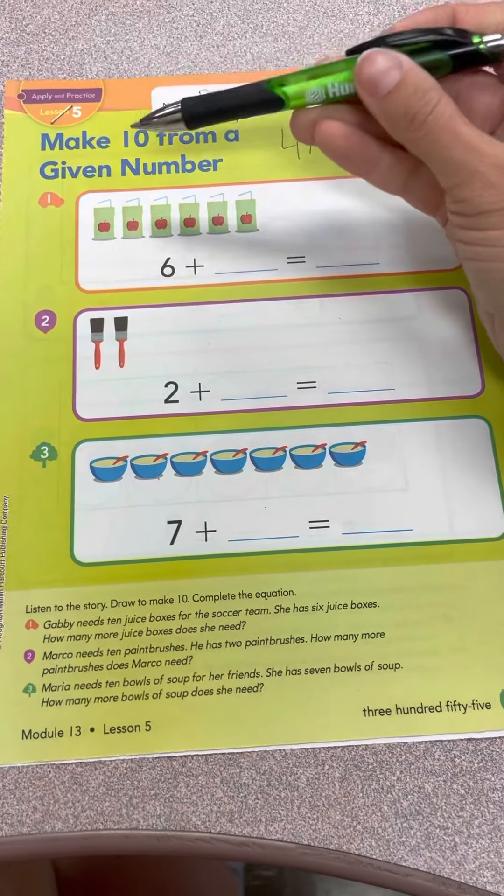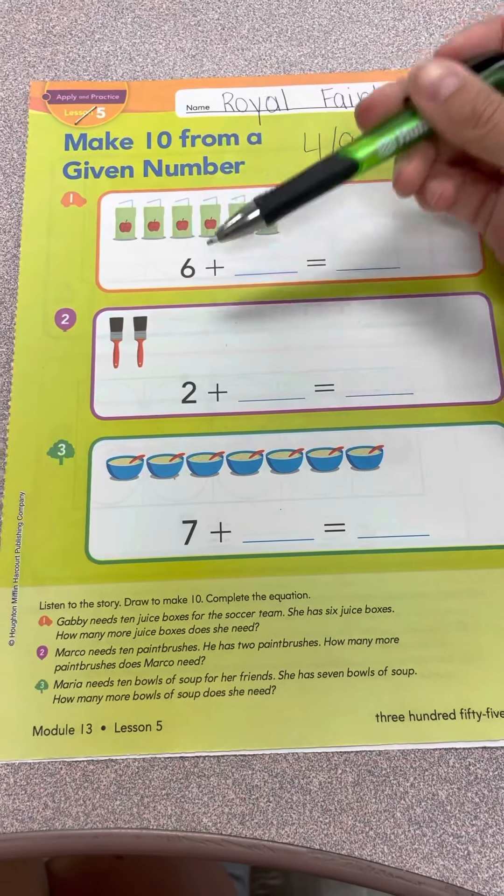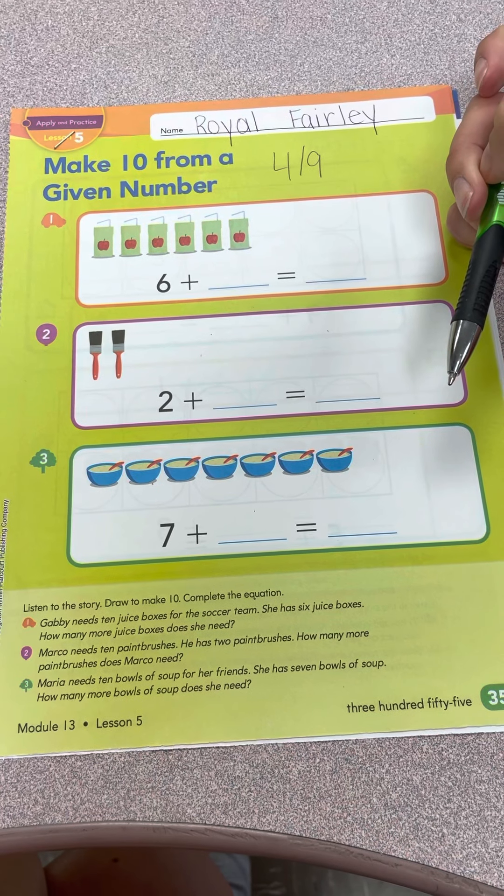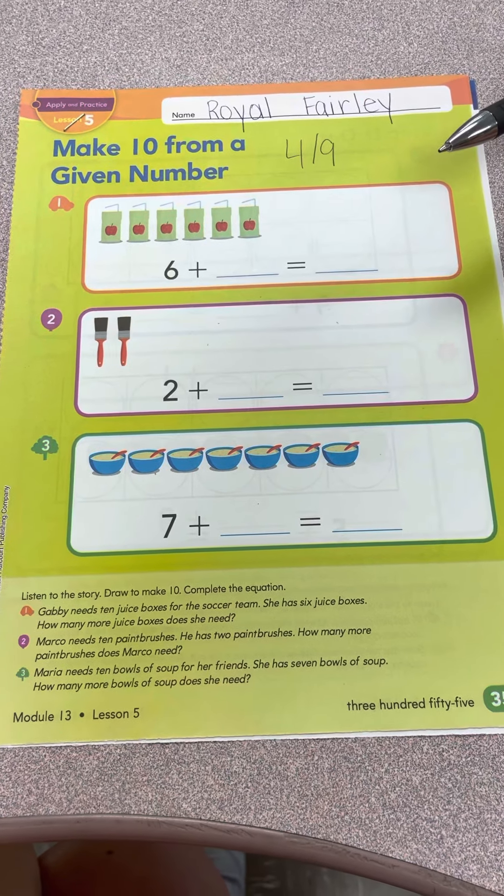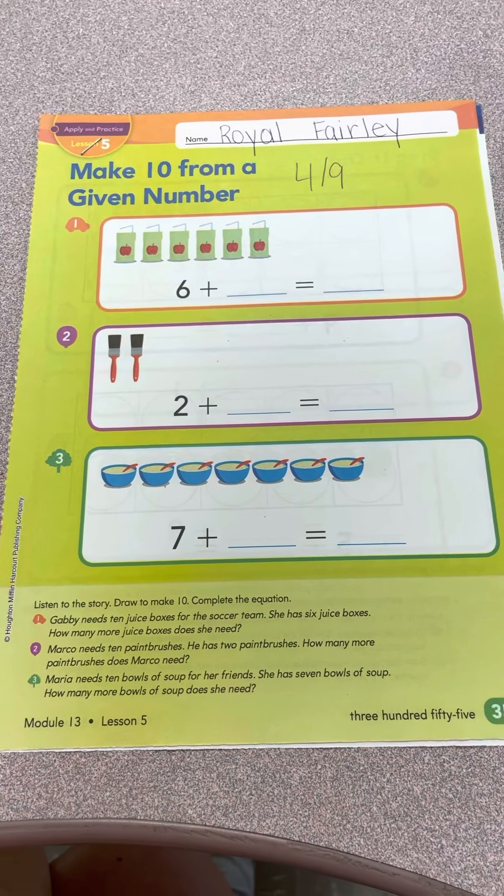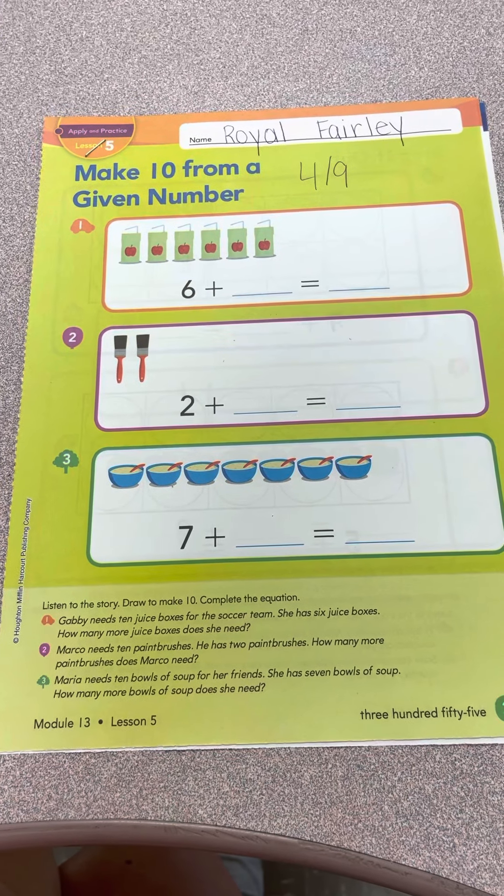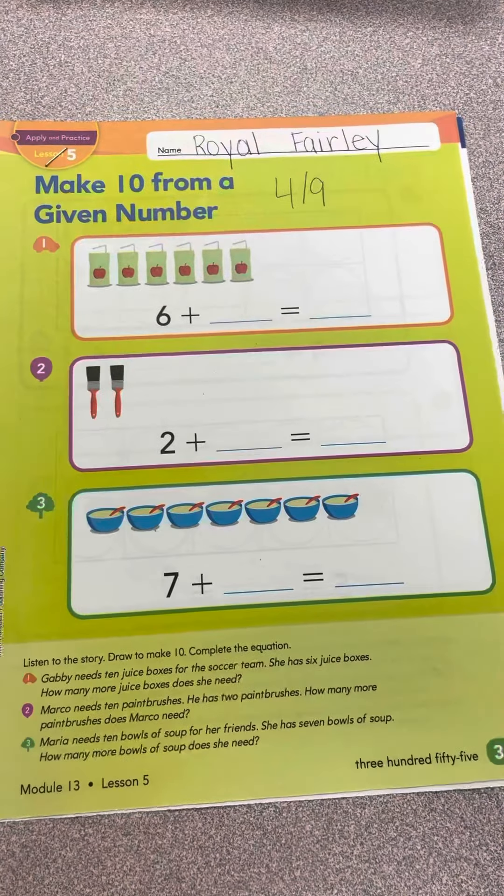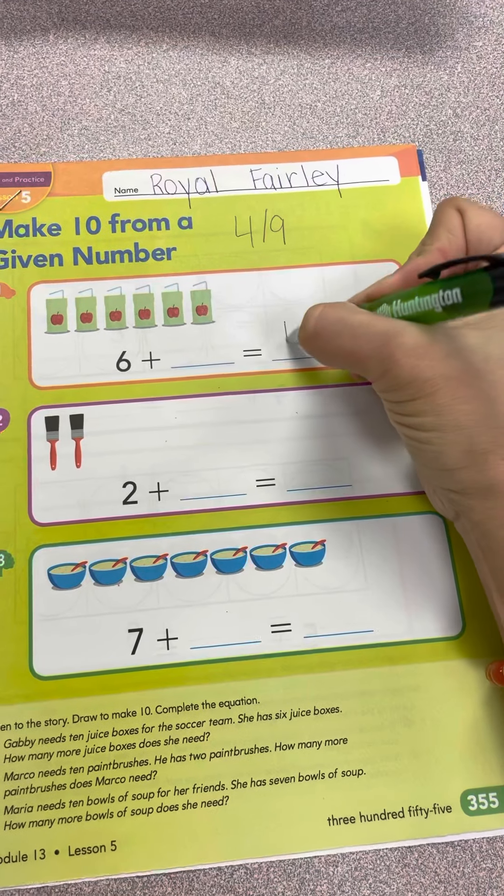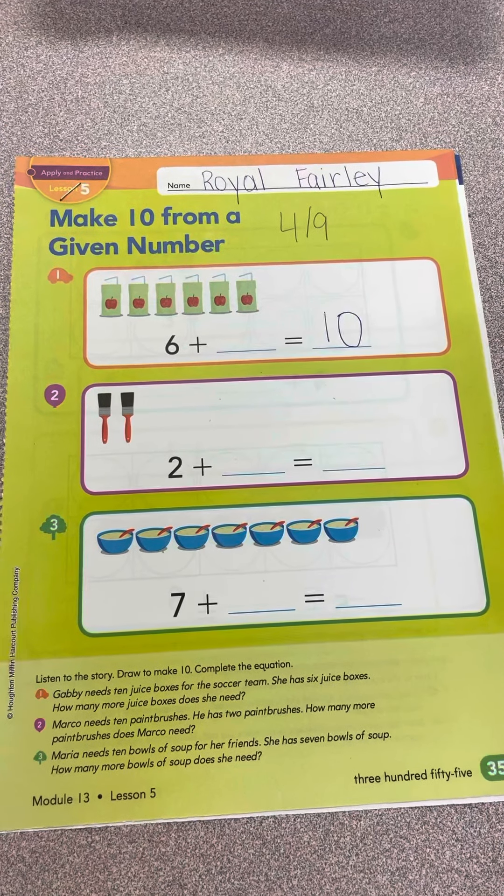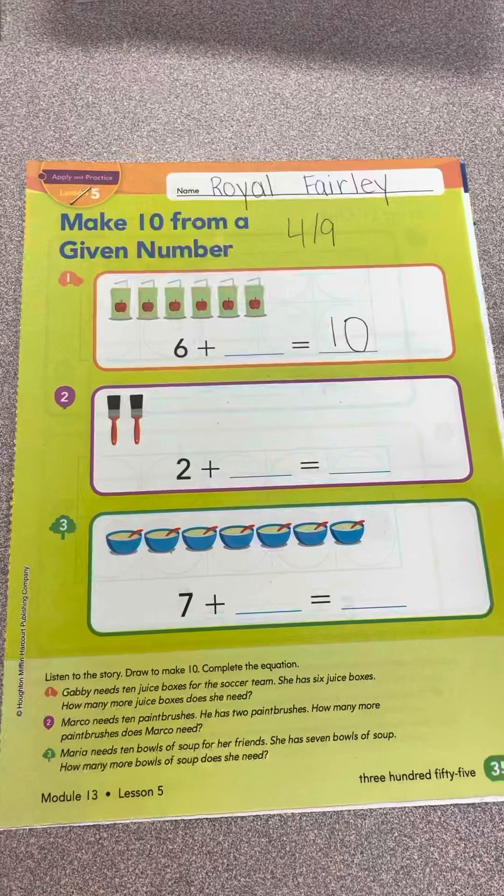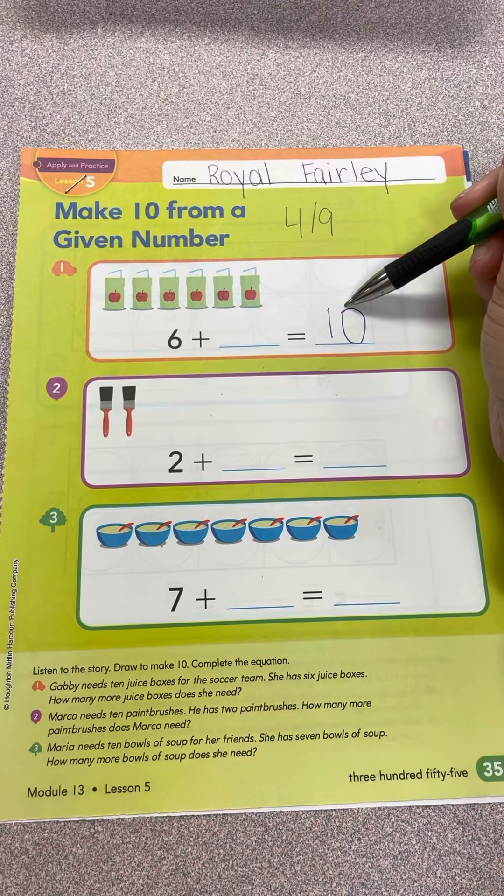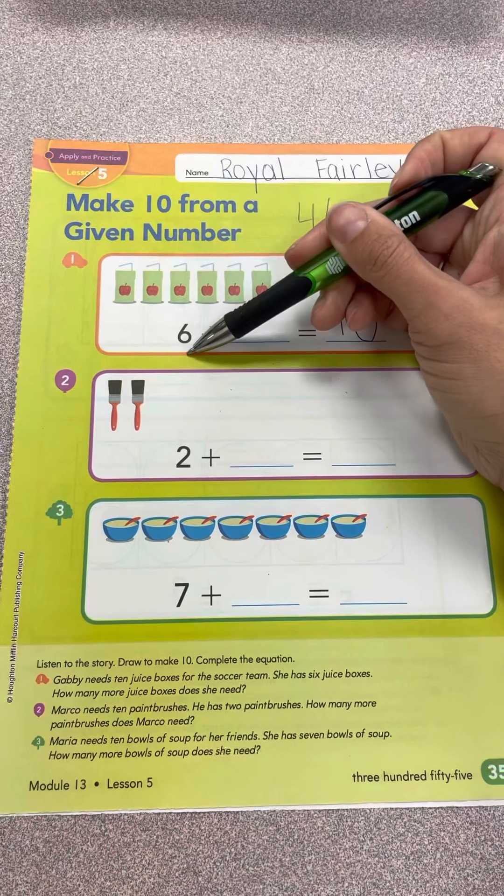So today we are going to make 10 from a given number. That means they're going to give us a number already and we have to make more to make 10 all together. So they want us to make 10 out of some we've already been given. Listen to the story. Draw to make 10, complete the equation. Gabby needs 10 juices for the soccer team.